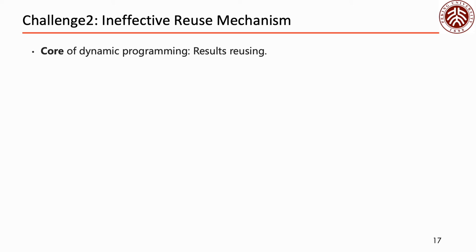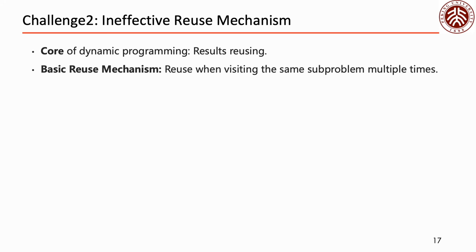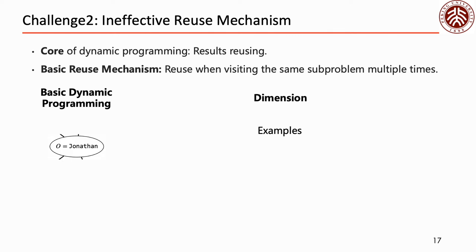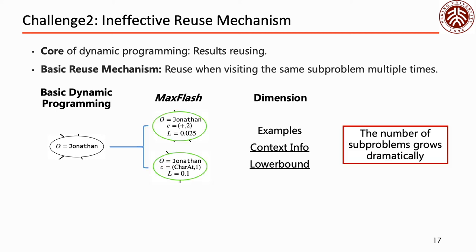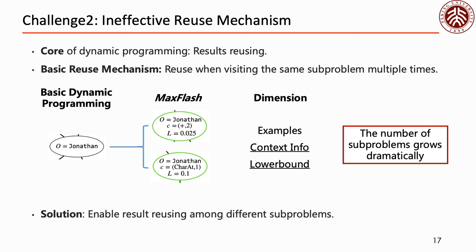Now, let's turn from structural probability to dynamic programming. The secret of the success of dynamic programming is that it reuses results to avoid duplicate calculations. The basic reuse mechanism is that results are reused when visiting the same subproblem multiple times. However, in order to utilize structural probability in MaxFlash, two other dimensions — context information and lower bound — are involved, causing the number of subproblems to grow dramatically. To improve the efficiency of the reuse mechanism, we try to enable result reusing among different subproblems, specifically across the example dimension and the lower bound dimension.